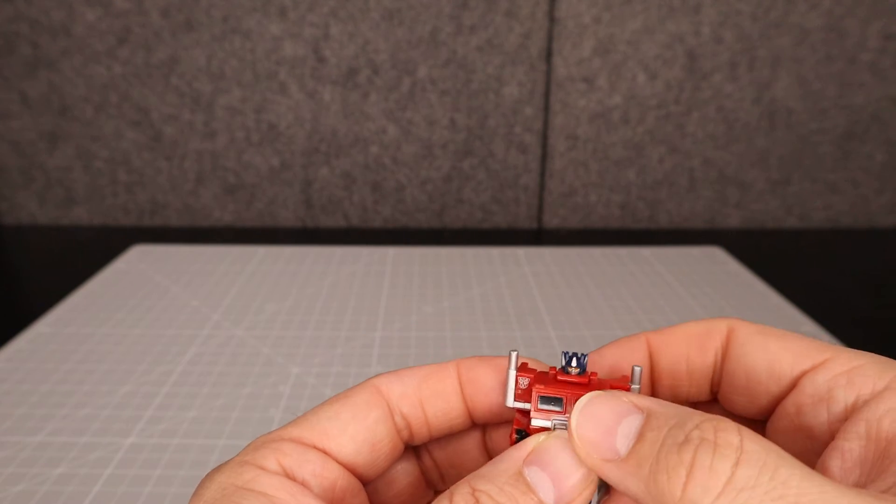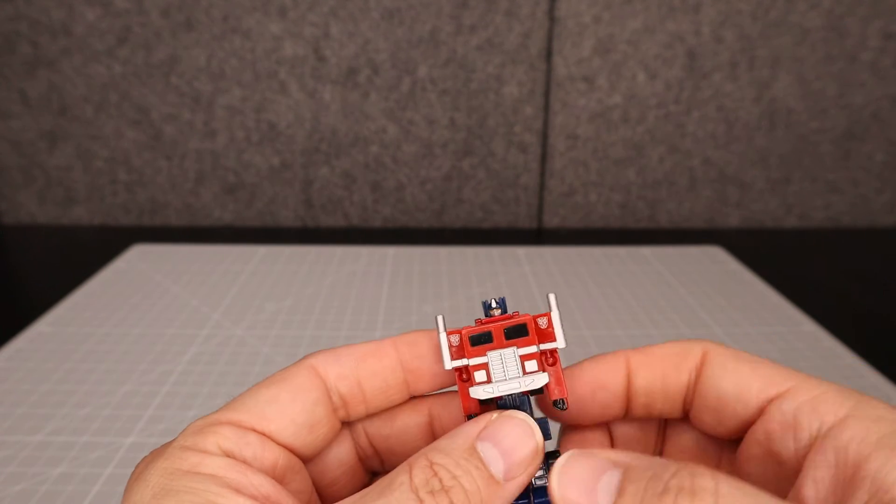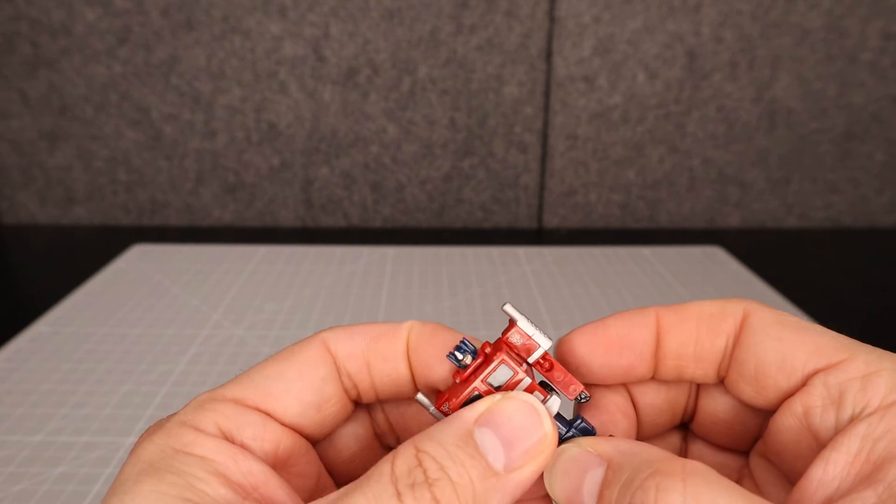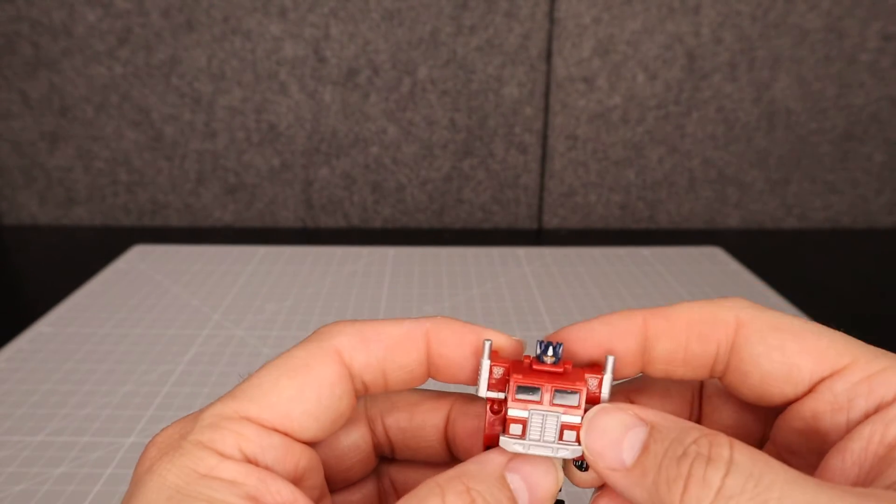And there you have him. That is Optimus Prime, the smallest Optimus Prime in his robot mode.